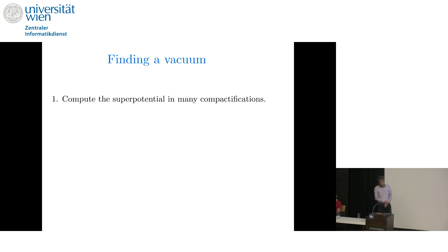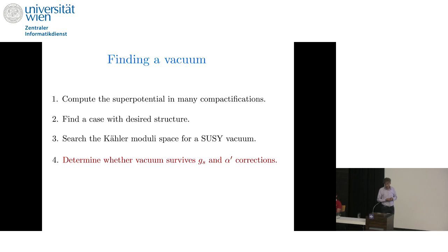And now, let's talk about how we actually find a vacuum. So we compute the superpotential along the lines that I've just presented so far in many compactifications. We select a case that has a desired structure, a case that has a good racetrack, a case that has a perturbatively flat direction. And then, given one, we search the Kähler moduli space for a supersymmetric vacuum. Having found such a vacuum, we determine whether the vacuum survives string loop and alpha prime corrections.